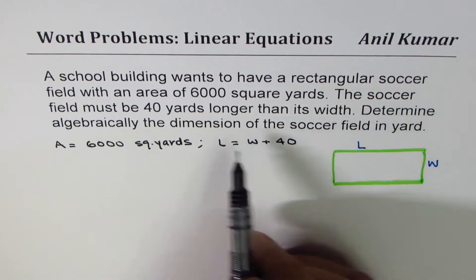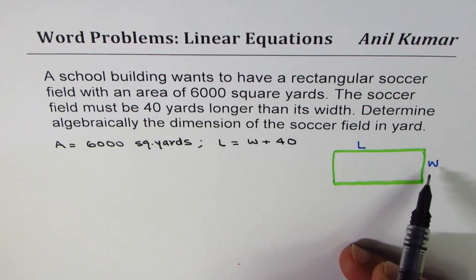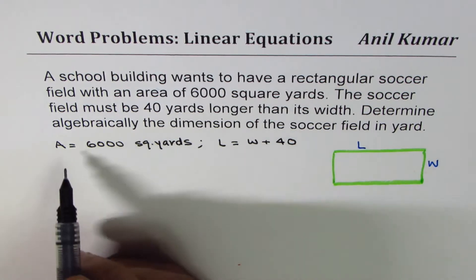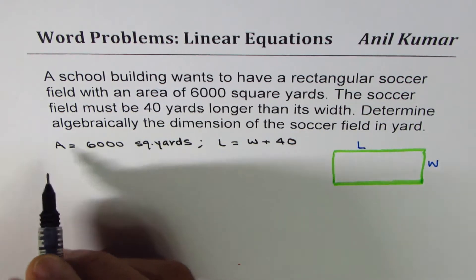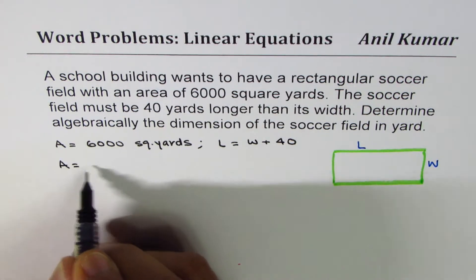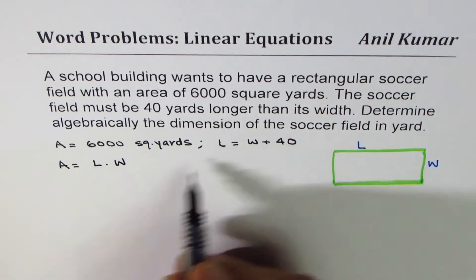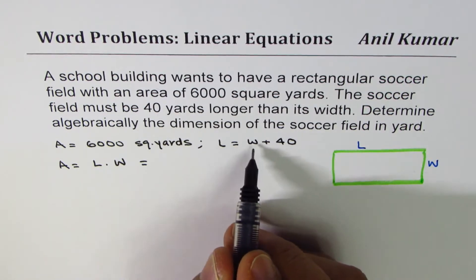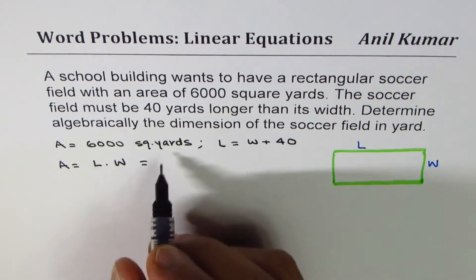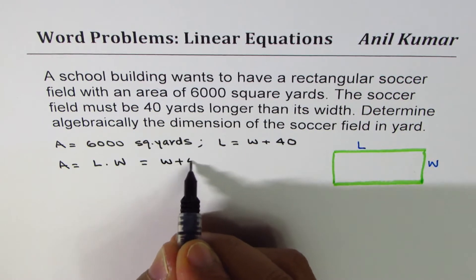We need to find length and width, that is the dimensions in yards. Now what is area? Area is product of length and width. We know here that length is W plus 40, so let me replace length with W plus 40.